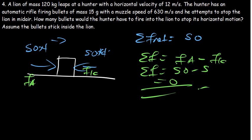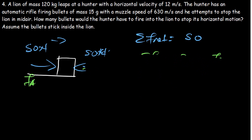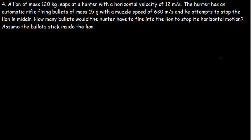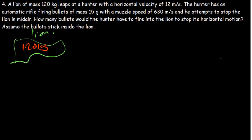This is the same principle here. The question says a lion of mass 120 kg leaps at a hunter with a velocity of 12 meters per second. Let's draw a free body diagram. Here is the lion, with a mass of 120 kg, moving toward the person with an initial velocity of 12 meters per second.